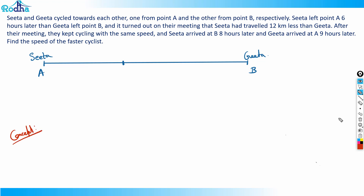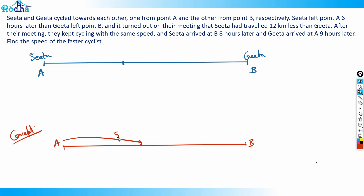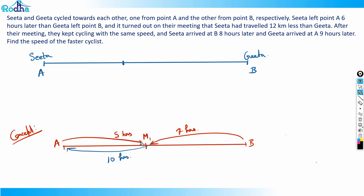Let me take a different example to explain the concept. Say A and B are two people meeting at a point M1. A has traveled a certain distance in 5 hours, and B has traveled for 7 hours to reach meeting point M1. Now if B continues its path and reaches point A in another 10 hours, can we find how much time the other person will take to reach B?